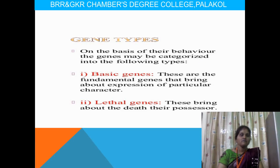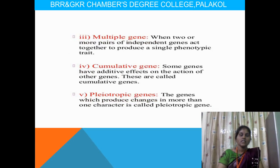Next, there are different types of genes classified on the basis of their behavior. The first is the basic gene — fundamental genes that bring about the expression of a particular character. The next is lethal genes, which cause death in the organisms. The next is multiple genes — when two or more independent genes add together to produce a specific character. That is called multiple genes.